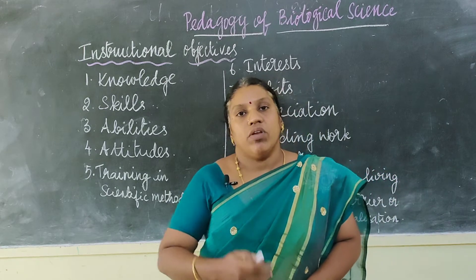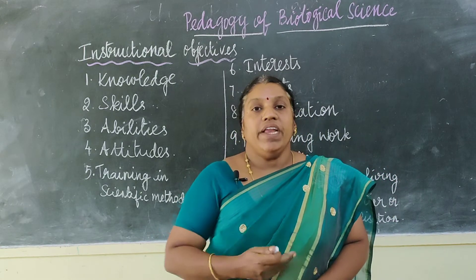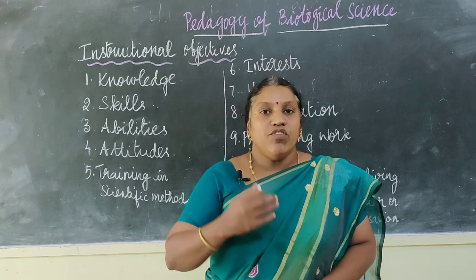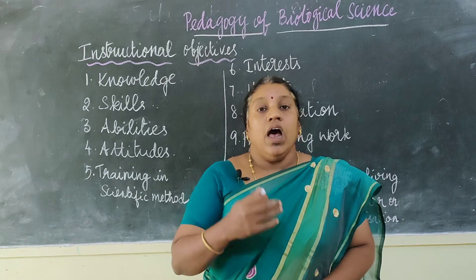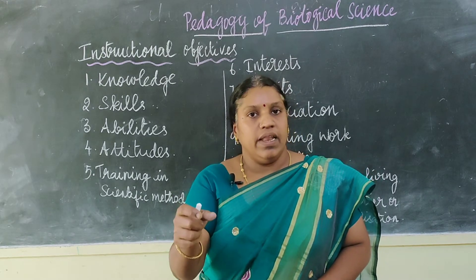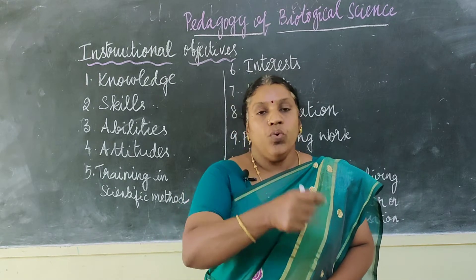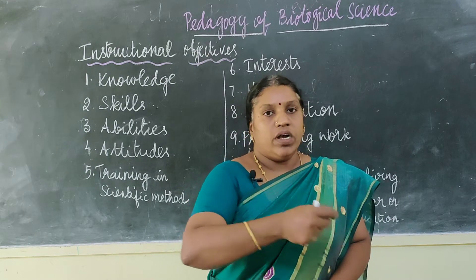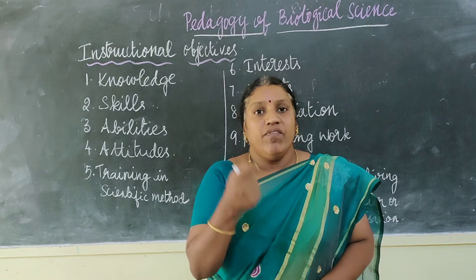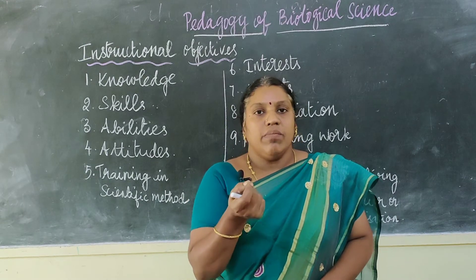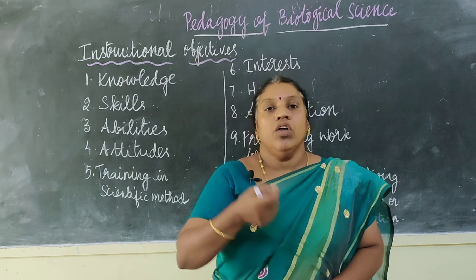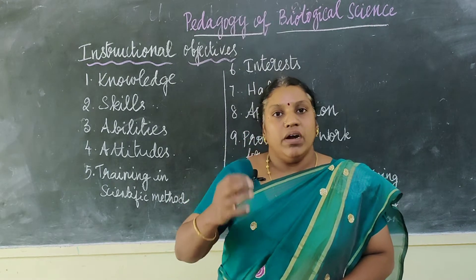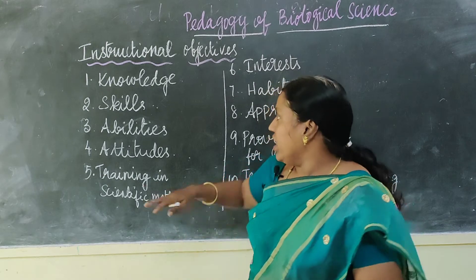The next instructional objective is helping them to learn different types of skills. Skills are nothing but making them trained in a specialized field. For example, we have to make them learn how to handle an apparatus in the lab, how to make things perfect, how to do a task, how to draw a diagram. Everything is a skill practice. Through science teaching, we are able to make them learn about different kinds of skills.